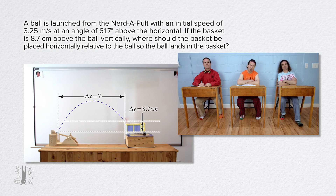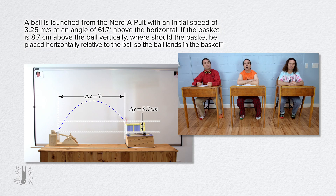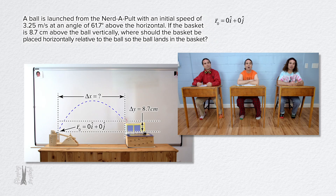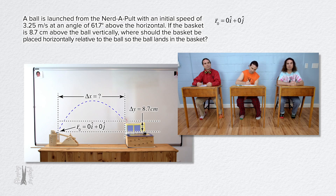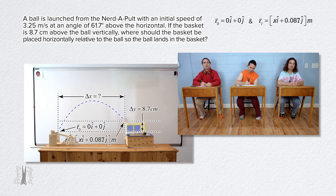Okay, so I get it this time. We know the initial and final position vectors, the initial velocity vector, and the acceleration vector. Let's set the initial point at zero. So r position naught equals zero times unit vector i plus zero times unit vector j meters. The final position of the ball is 8.7 centimeters or 0.087 meters in the y direction and an unknown distance, let's call it x, in the x direction. So final r position equals x times i plus 0.087 times j meters.